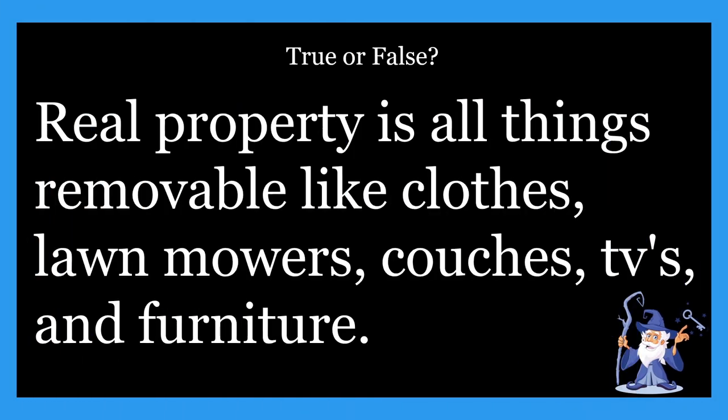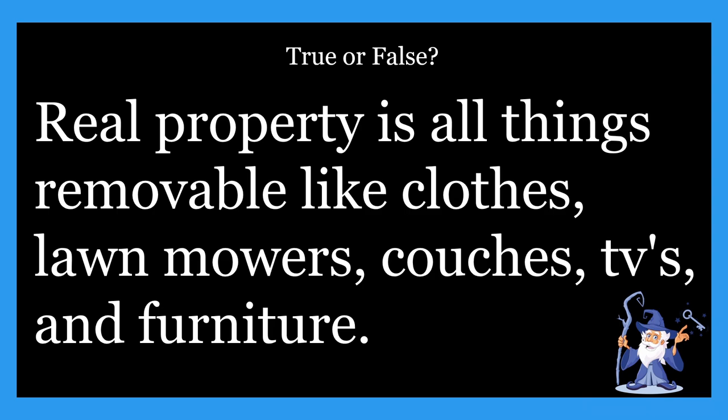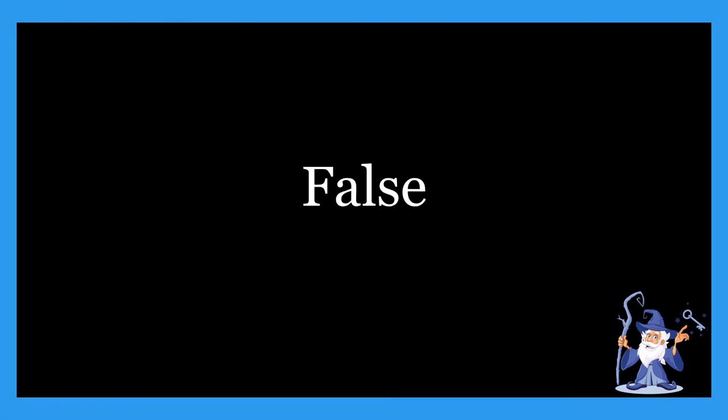Next one: real property is all things removable like clothes, lawnmowers, couches, TVs, and furniture. Is that true or false? It's going to be false. Real property is all things attached to the land and the legal rights to it. Real property is usually things that are immovable, such as a home itself or the buildings within the property line. There are some exceptions for businesses, but what was listed is personal property, not real property.